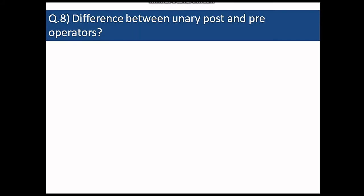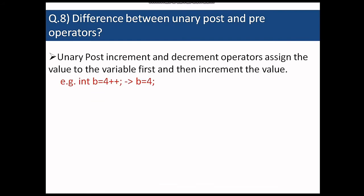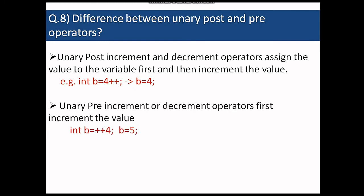The next question is about difference between unary post and pre operators. So we know that unary post operator increments the number, so if we have unary post increment it increments the number by one. So when we use unary post increment operator it assigns the value first to the variable and then increments. So for example if we have int b equal to 4 plus plus or 4 minus minus, b's value is going to be 4 itself because after assigning the value 4 is incremented to 5. And unary pre increment or decrement operator first increments and then assigns the value. So for int b equal to plus plus 4, b is going to be 5 because first the value is incremented and then assigned to the variable.